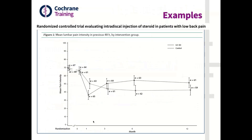Let's move on to some examples. This is a randomized controlled trial evaluating an intradiscal injection of steroid in patients with low back pain. These are the results for the outcome of lumbar pain intensity in the previous 48 hours. You can see the mean pain level in both arms, assessed at one month, three months, six months, and 12 months, with the mean and 95% confidence interval.